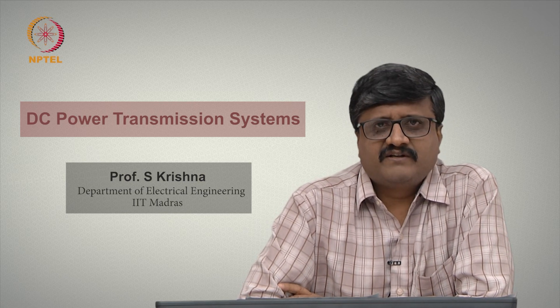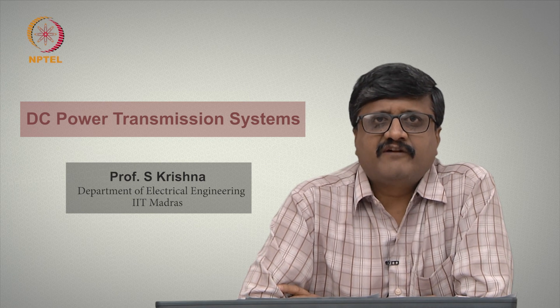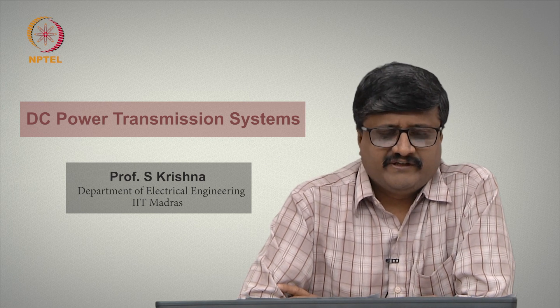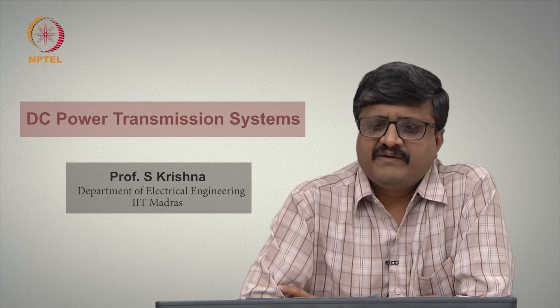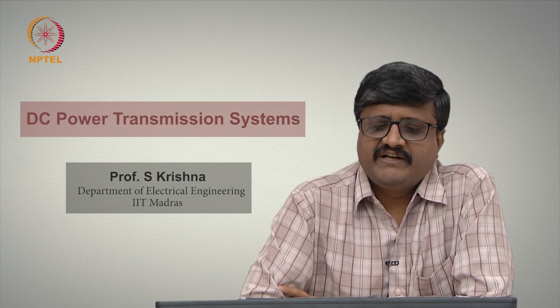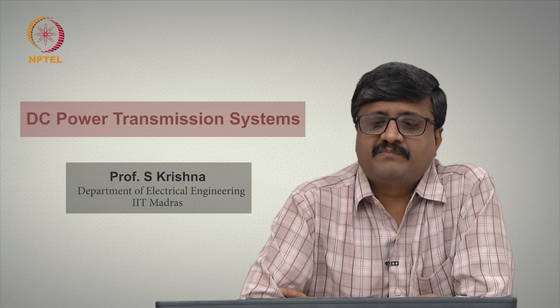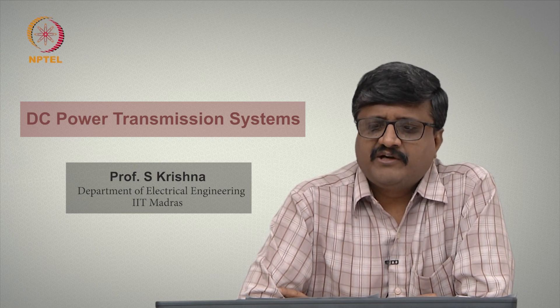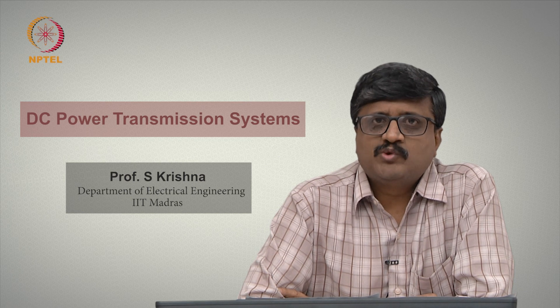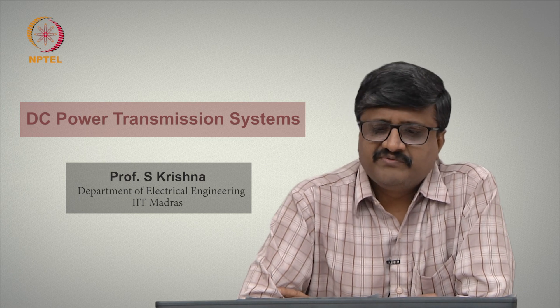You will also learn a circuit called the capacitor commutated converter. In any converter, we will have some control variables. In addition to the delay angle of the thyristor valves, there is a provision to change the position of the transformer tap. We will see how one can use the control variables to achieve the desired objectives.